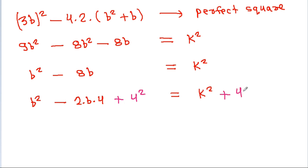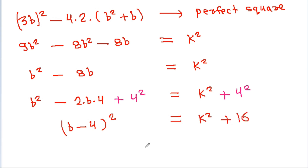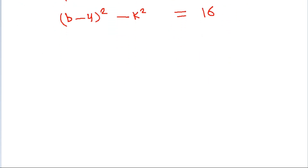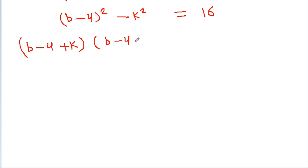Completing the square: (b minus 4) squared minus k squared equals 16. So (b minus 4 minus k) times (b minus 4 plus k) equals 16.